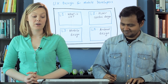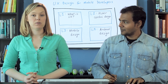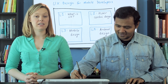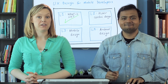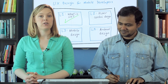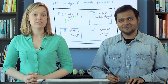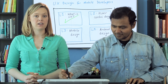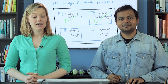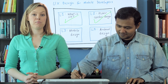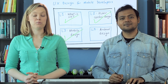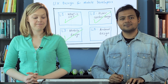To recap what we've learned so far: in lesson one, we talked about what is UX and the difference between UI and UX. In lesson two, we talked about the user-centric design process and got into personas and use cases. In lesson three, we talked about the mobile user and talked about different mobile user constraints.